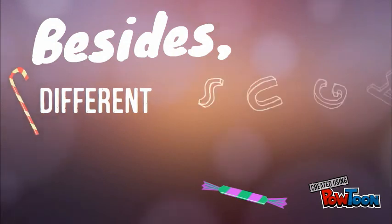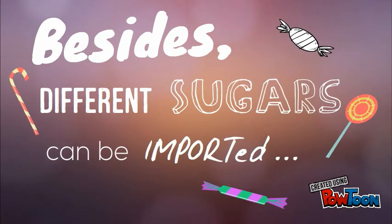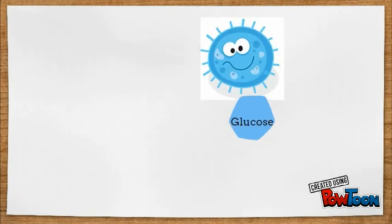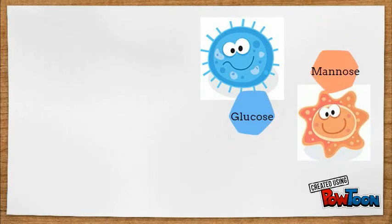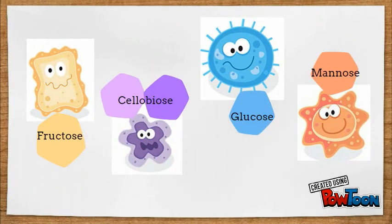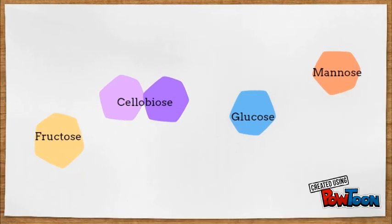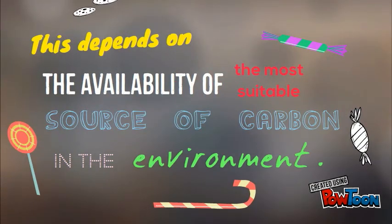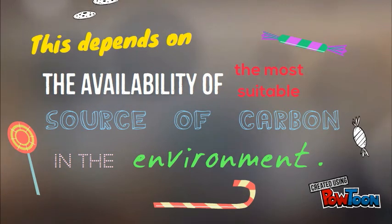By PTS, different sugars can be transported into bacteria, including glucose, mannose, fructose, and cellobiose. PTS sugars transported differ from one bacterial group to another, reflecting the most suitable carbon sources available in the environment each group evolved in.